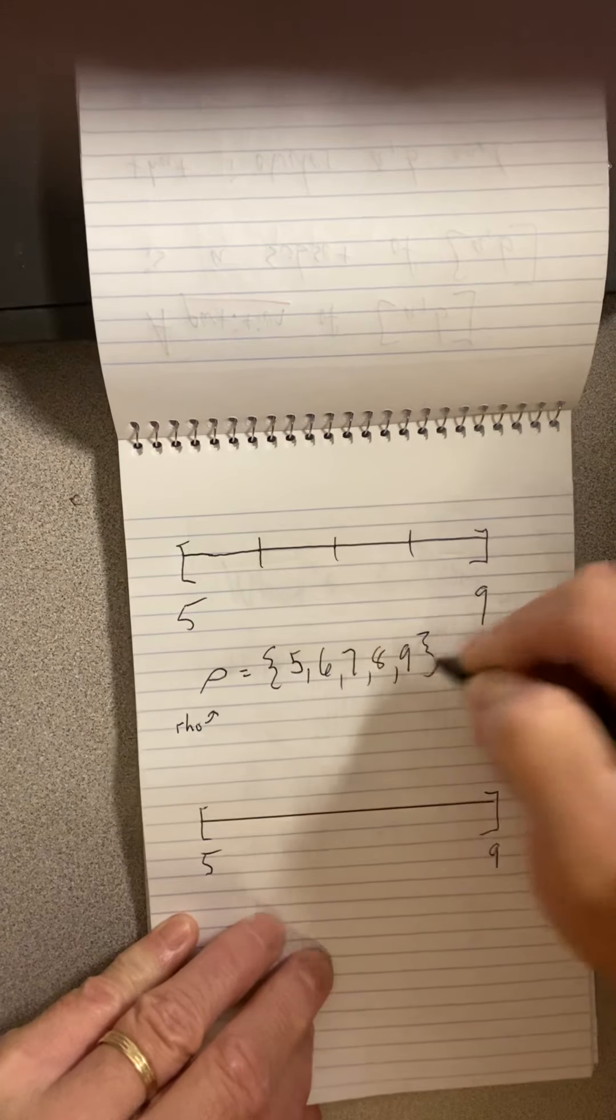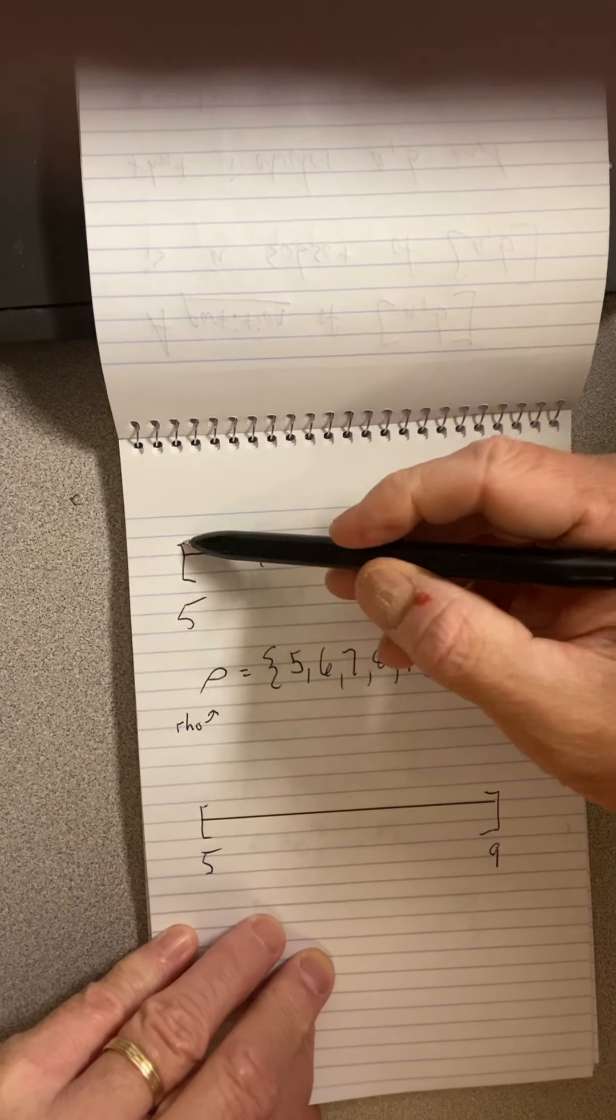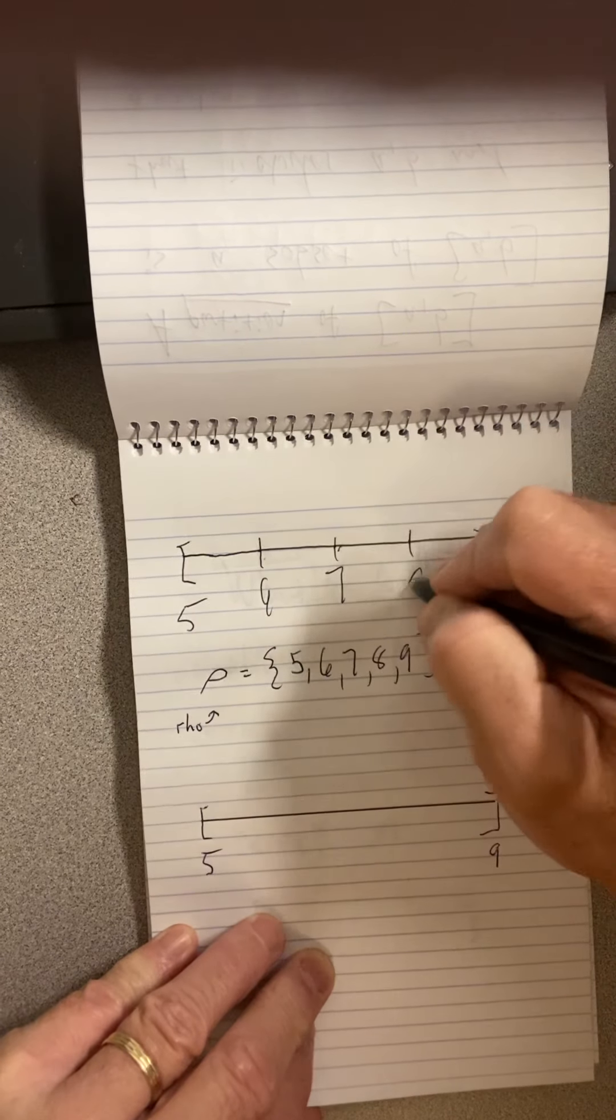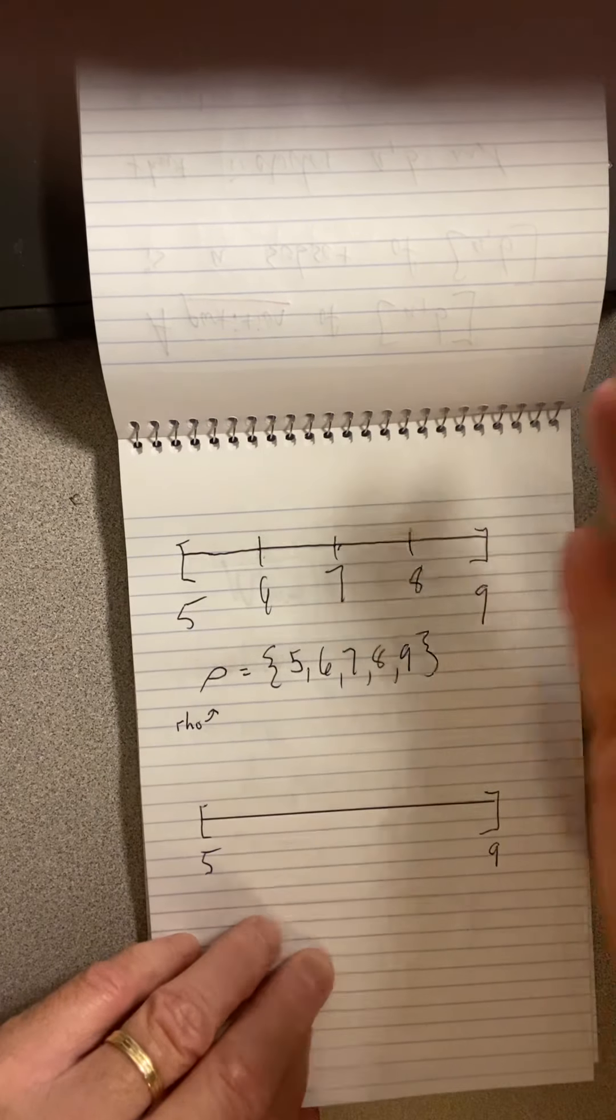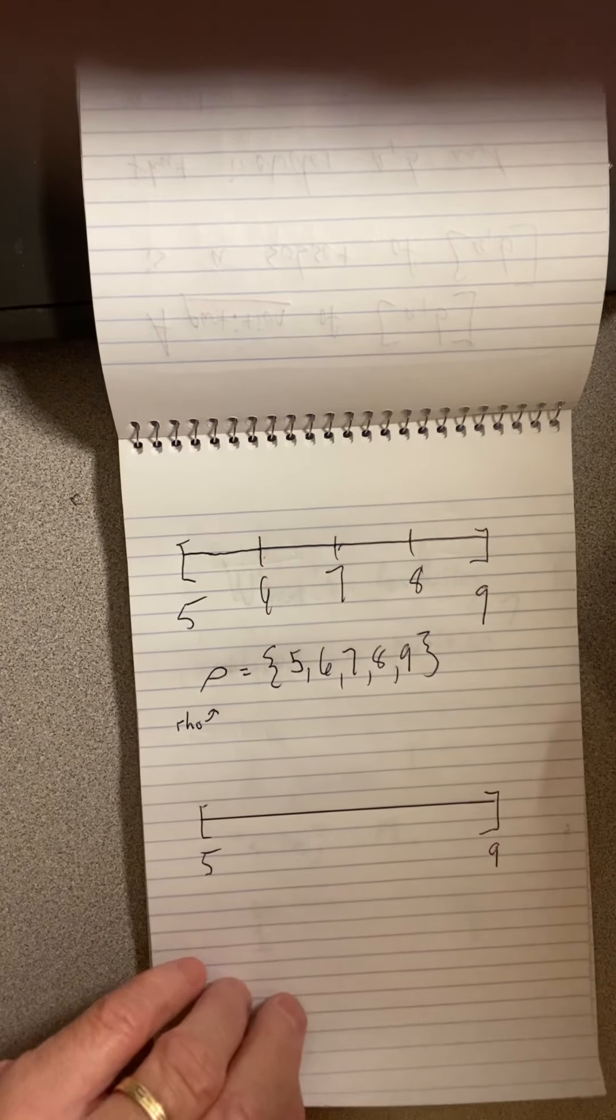So notice what I did. I created some little sub-intervals. I have an interval from 5 to 6, an interval from 6 to 7, an interval from 7 to 8, and an interval from 8 to 9. So I just chopped it up, like chopping up a carrot. And this is my partition.